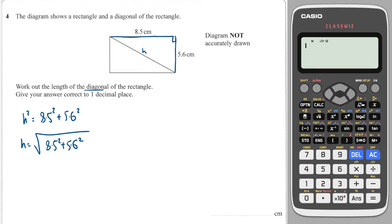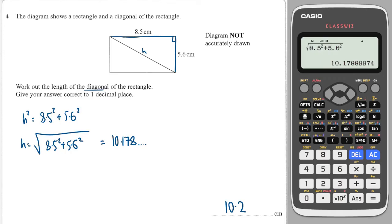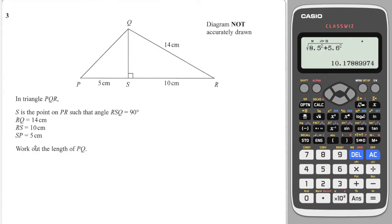So H is equal to the square root of 8.5 squared plus 5.6 squared. We go to our calculator, press the square root button, 8.5 squared plus 5.6 squared, and we get 10.178, and we want it to one decimal place, so that is 10.2.